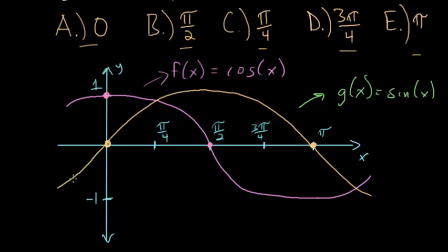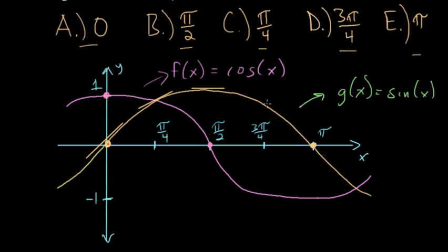Let's start with the sine function. The tangent line at x equals 0 looks like that. At pi over 4, it looks like that. At pi over 2, the slope would be 0. At 3 pi over 4, it looks like that. And evaluated at pi, it looks something like that.